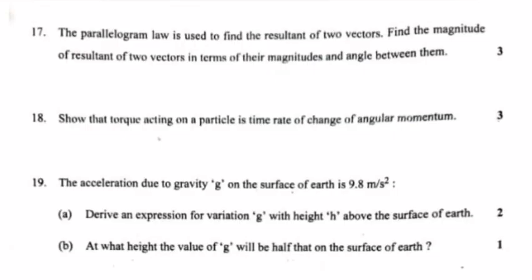Problem 19: The acceleration due to gravity g on the surface of Earth is 9.8 meters per second squared. (a) Derive an expression for variation g with height h above the surface of Earth. (b) At what height the value of g will be half that on the surface of Earth?